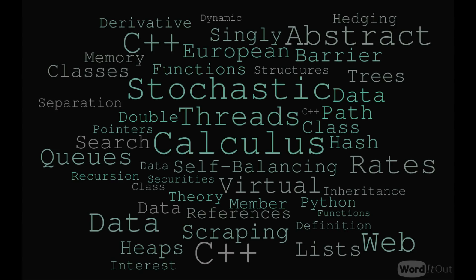Finally, computer science rounds out the quant degrees. This is going to be heavy in C++ — one of the largest topics. You'll cover calculus, threads, multi-threading, and parallel computing, which is big. Python is a bit smaller but becoming more and more used, though it's not as fast as C++. A lot of the focus is on C++ and object-oriented languages — covering things like classes, memory, pointers, data structures, and recursion. That's the summary of the master's in financial engineering.